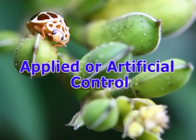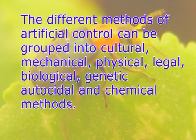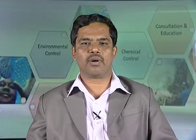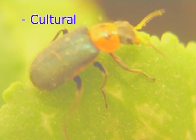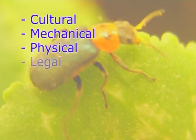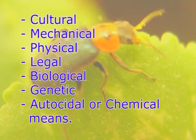Applied or artificial control: the different methods of artificial control can be grouped into cultural, mechanical, physical, legal, biological, genetic or autocidal, and chemical methods. Depending upon whether these measures are taken as a preventive step before the actual occurrence of the pest or as a curative step to eliminate the insects after they have gained a foothold in the crops, the control methods are termed as prophylactic or preventive and curative or direct methods respectively — irrespective of whether such measures are through cultural, mechanical, physical, legal, biological, genetic or autocidal, or chemical means.